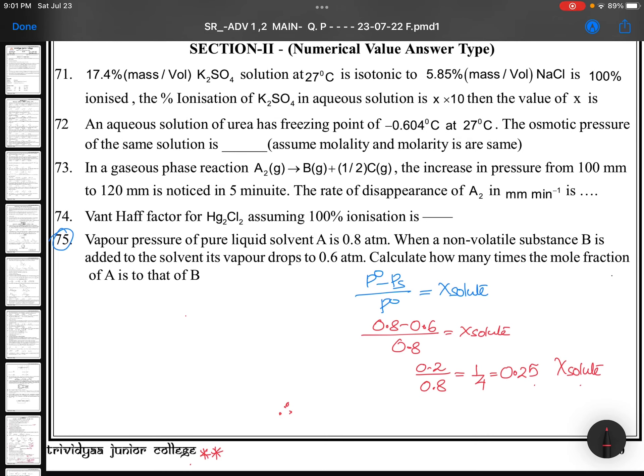The topic is dilute solutions and colligative properties. The question is: vapor pressure of pure liquid solvent A is 0.8 atm. When a non-volatile solute is added, its vapor pressure drops to 0.6 atm.